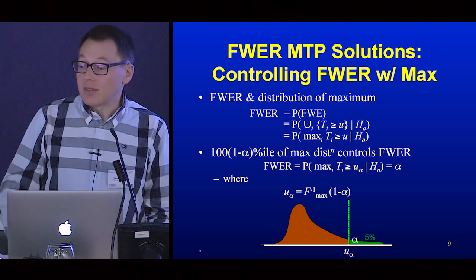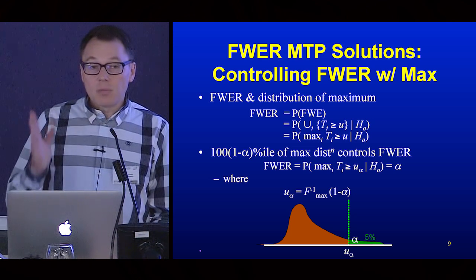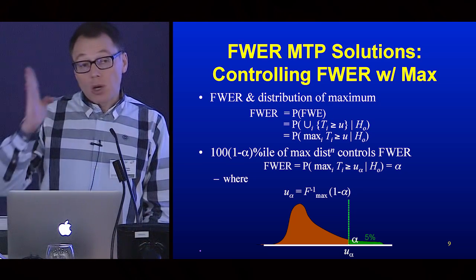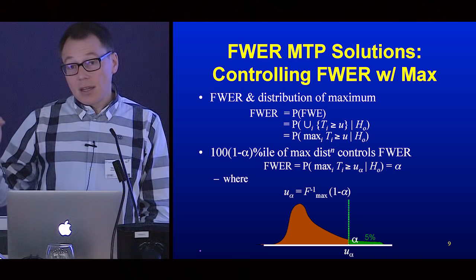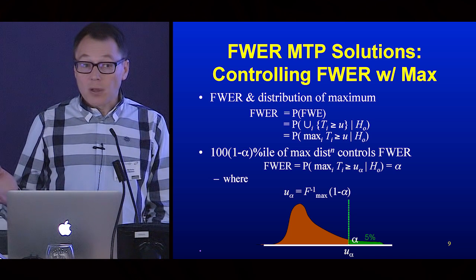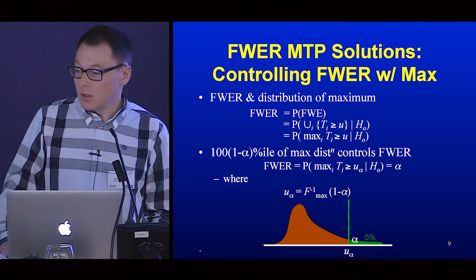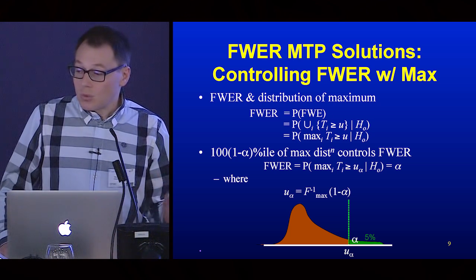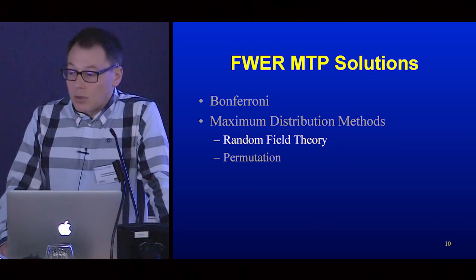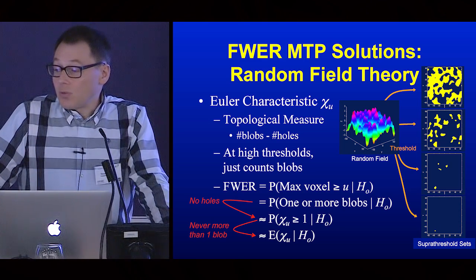For general dependence, there's no easy way to get this maximum distribution. But there is an approach widely used in brain imaging called random field theory. It's based on the connection to the topology of random sets. Consider a visualization of a 2D random Gaussian process with mean zero, variance one. If you threshold it at progressively higher levels, you can define the Euler characteristic on these sets.